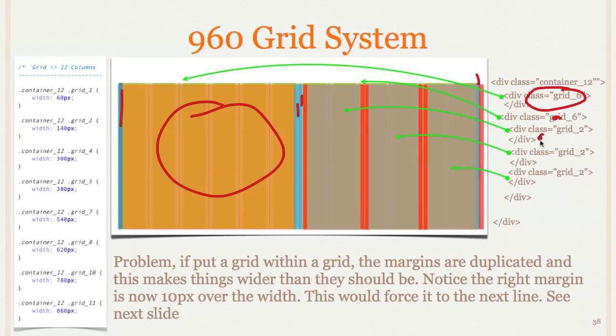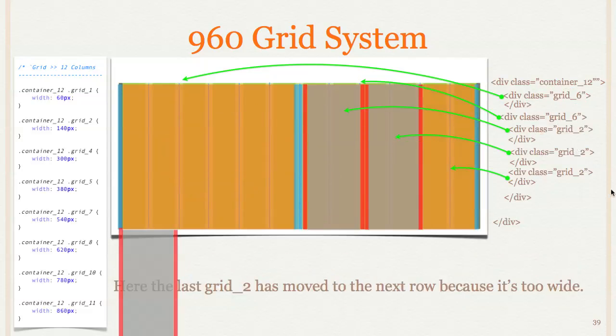But then I'm adding these grid 2s inside of it, each one. And so they're getting an additional left and right margin and their width in it. What's happened is that that pushes everything over, as you can see here a little bit, 10 pixels to the right. Because I sort of duplicated on this part here, the 10 pixels. So there's 10 from the 6 here and 10 from this 2 there.